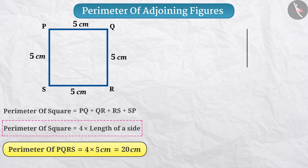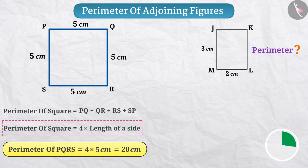Now, you can draw a rectangle JKLM with 3 cm length and 2 cm breadth on paper. Can you tell me what will be the perimeter of this rectangle? Here also, the perimeter of the rectangle will be sum of the lengths of all its sides.